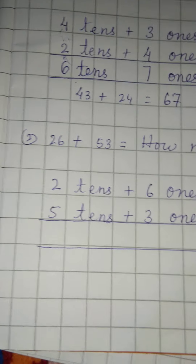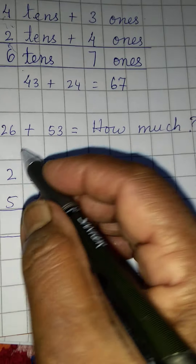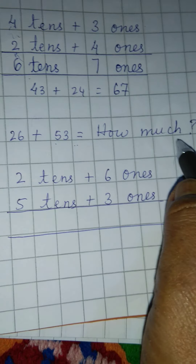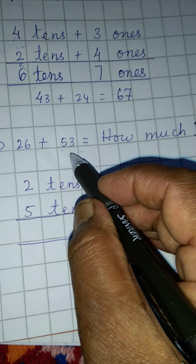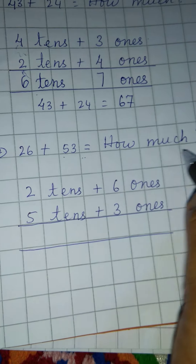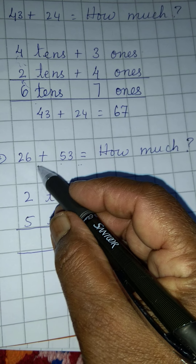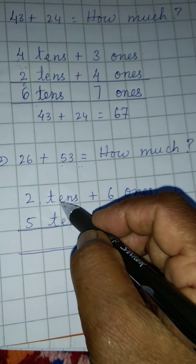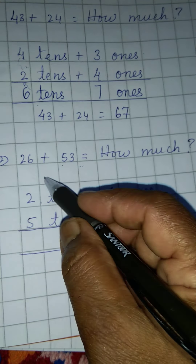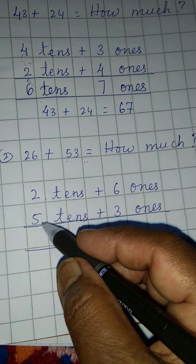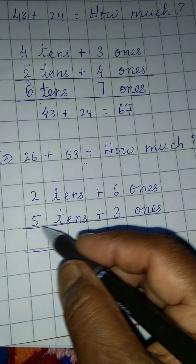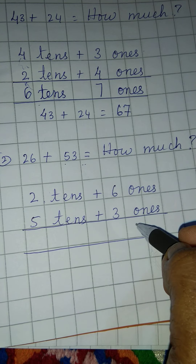Okay children, then come to the second one. Here 26 plus 53. How much? 26 plus 53 is equal to how much? In 26, how many tens are there? 2 tens. How many ones are there? 6 ones. Then 53 — 5 tens plus 3 ones.